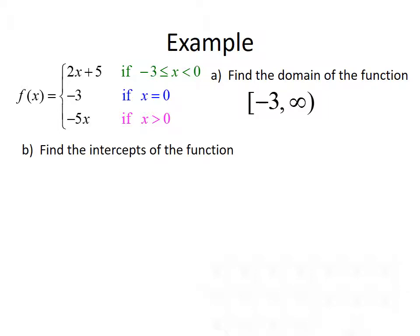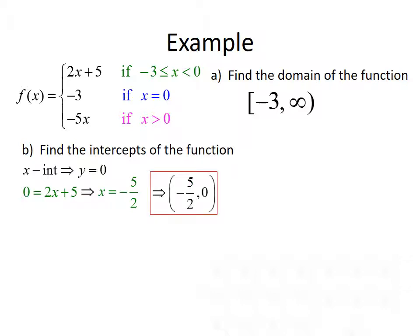Next, we want to find the intercepts. To find the x-intercept, we set y equal to 0 and apply this to each part of the piecewise function. Starting with the first formula, 0 equals 2x plus 5 gives us x equals negative 5 halves. Since negative 5 halves falls between negative 3 and 0, we have an x-intercept at negative 5 halves, 0.